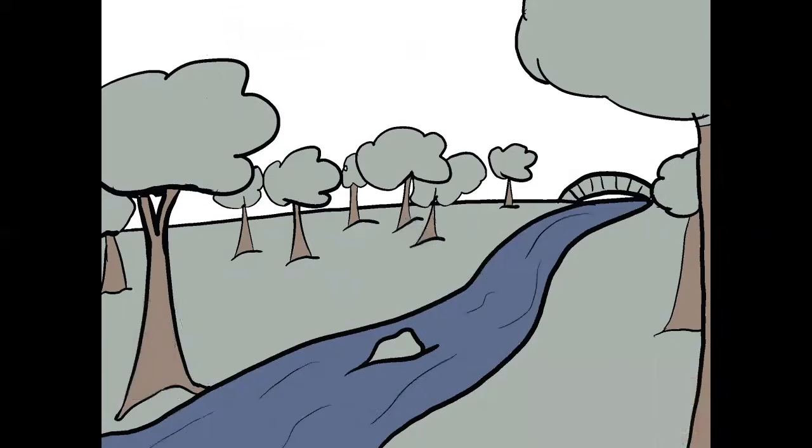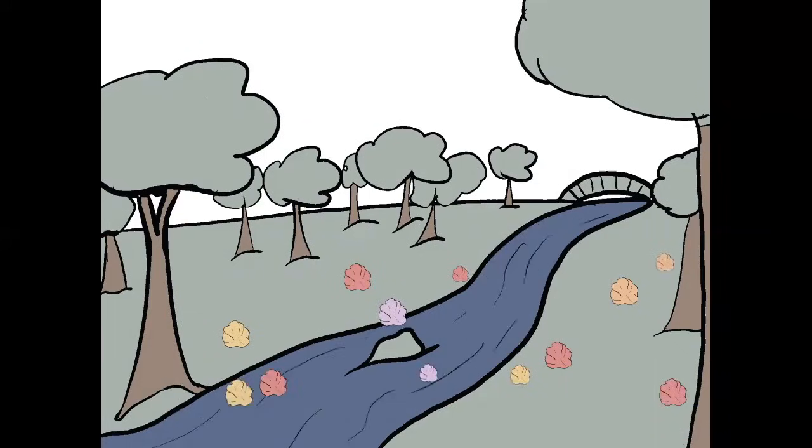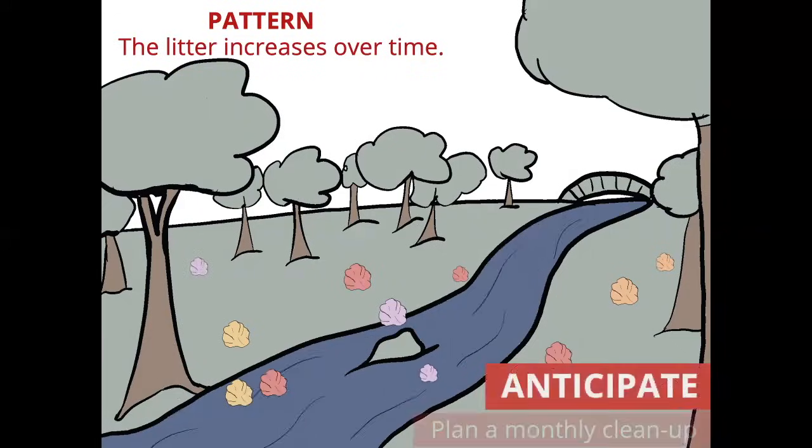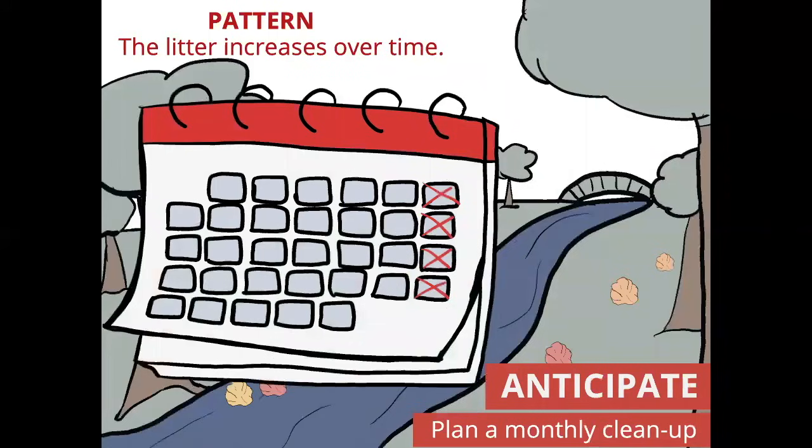You go back to the park often and notice that the amount of litter in the park is increasing over time. This is one example of a pattern that you see. You also notice that it tends to increase more on weekends or after a holiday. Now that you've recognized this pattern of litter increasing over time, you can create change by trying to anticipate this pattern, and you work with friends to volunteer for a weekly cleanup in the park where you come and collect all of this litter and dispose of it.